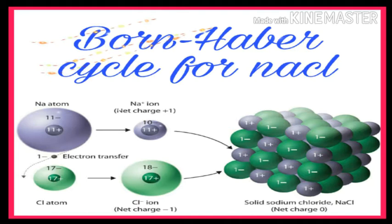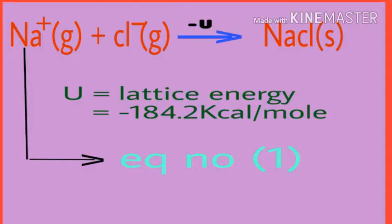Born-Haber cycle for NaCl. The enthalpy change in the formation of an ionic lattice from the gaseous isolated sodium and chloride ions is minus 184.2 kcal per mole. That enthalpy change which corresponds to this reaction is called the lattice energy of the ionic crystal. Na+ gas plus Cl- gas gives us NaCl solid.